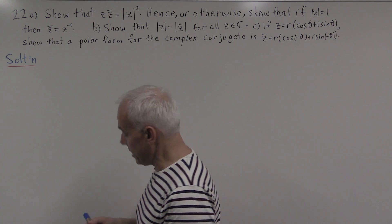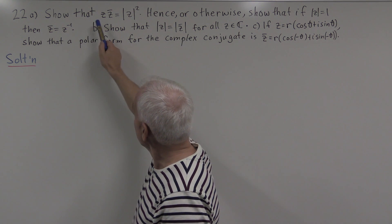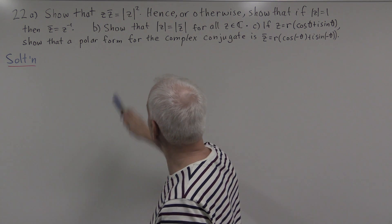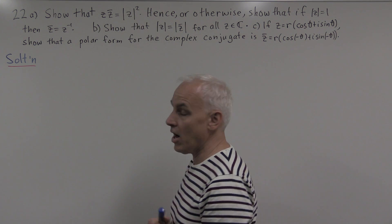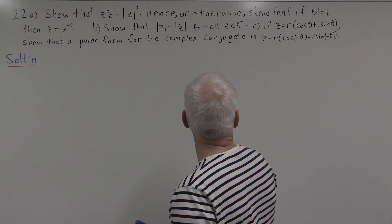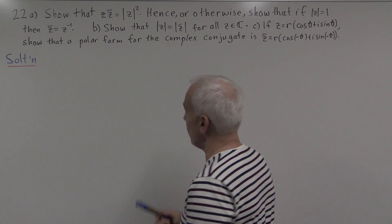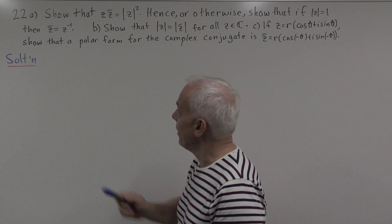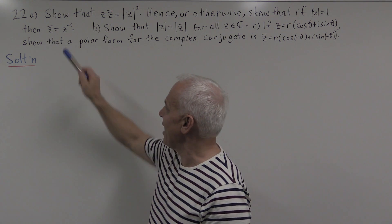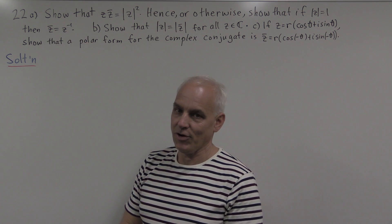Part a asks to show that the product of z times its complex conjugate z-bar is the length squared, the modulus squared of z. And hence, or otherwise, we're asked to show that if the modulus of z equals 1, then the complex conjugate of z is actually the inverse of z.